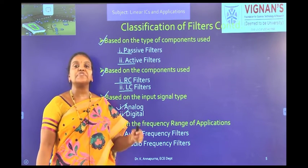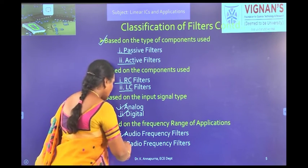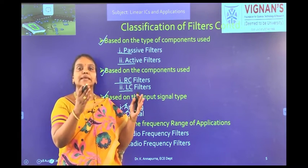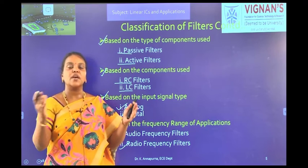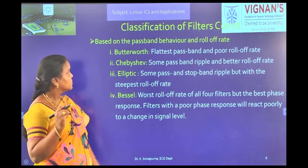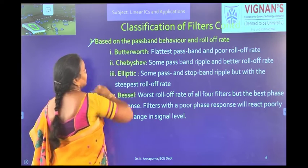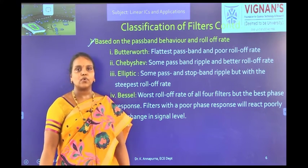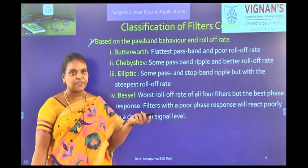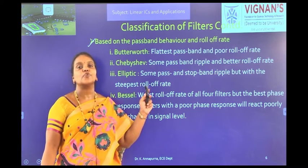Next, based on the frequency range of operation: if we are designing the filter in the kilohertz range, it is in the audio frequency range; if in the megahertz range, it is in the radio frequency range. The next classification is based on pass band behavior and roll-off rate — there are four types. The first one is the Butterworth filter, which has the flattest pass band but a poor roll-off rate. In our subject, we are having Butterworth filters.